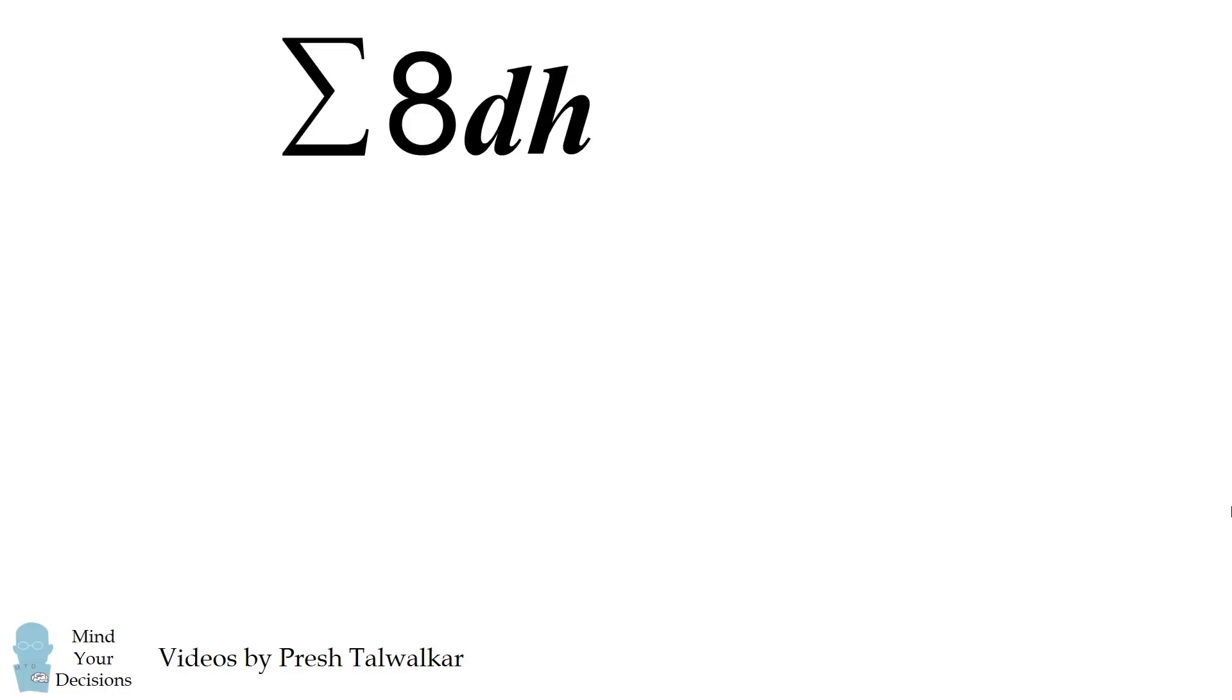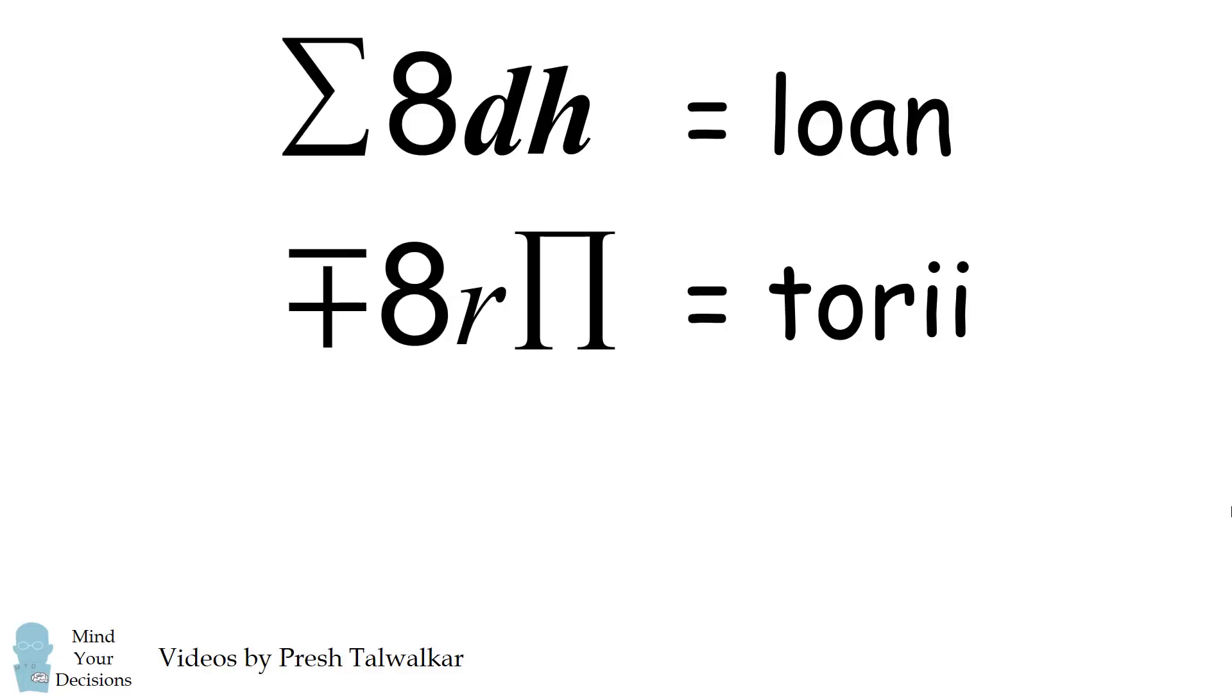If sigma 8 dh is equal to lone and minus plus 8 r pi equals tori,